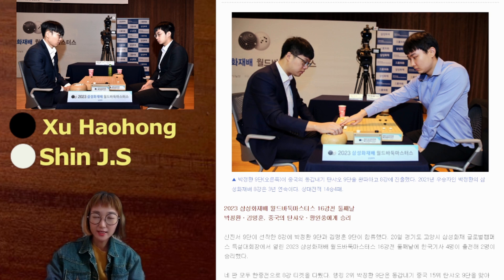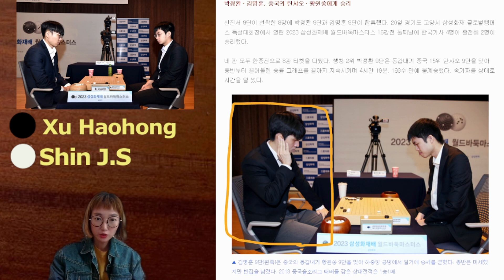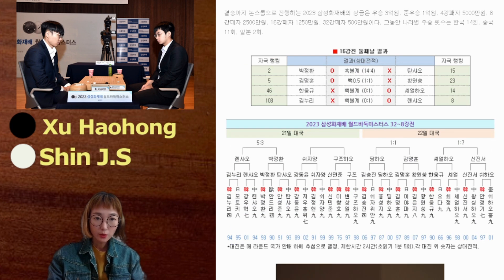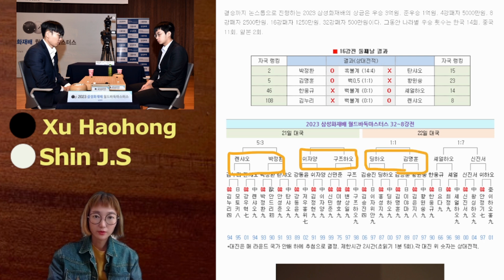And Shui Jiayang won against Gang Dong Hyun. The young player from Korea, Kim Seung Jin, lost against Ding Hao. This is the second day. Park Jong Han defeated Tan Shao, so he reached the quarterfinals. Kim Myung-hun, who is in very good shape these days, defeated Hwang Won-sung. And Shui Hao from China defeated Han Eun-gyu. In the quarterfinals, Park Jong-hwan met Lan Shao, and Guzhu Hao will play against Shui Jiayang.